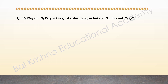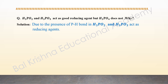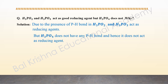The next question: why do H₃PO₂ (hypophosphorous acid) and H₃PO₃ (orthophosphorous acid) act as good reducing agents, but H₃PO₄ (orthophosphoric acid) does not? The answer: reducing nature depends on P-H bonds. H₃PO₂ and H₃PO₃ contain P-H bonds and therefore act as reducing agents. H₃PO₄ does not have any P-H bond and hence does not act as a reducing agent.